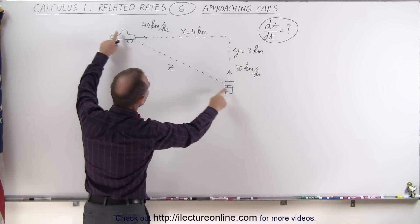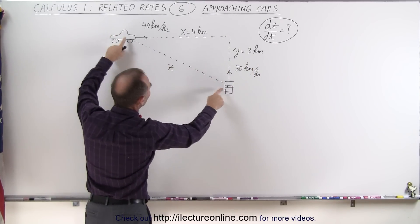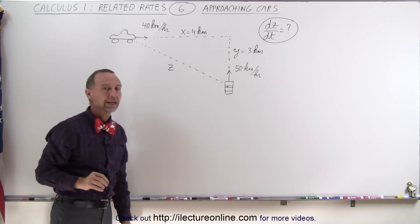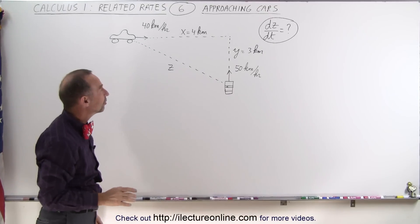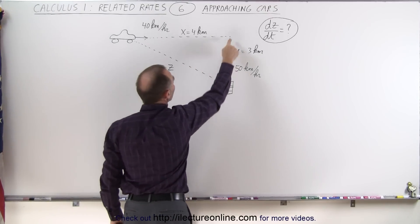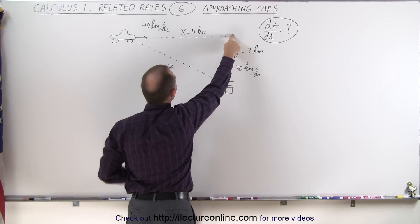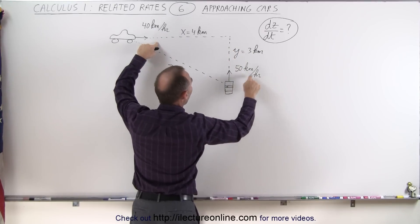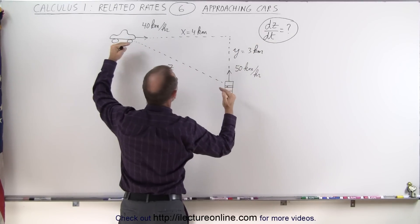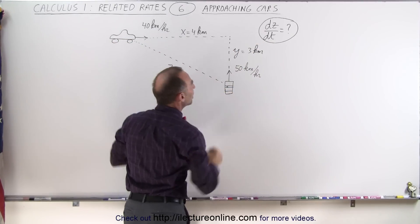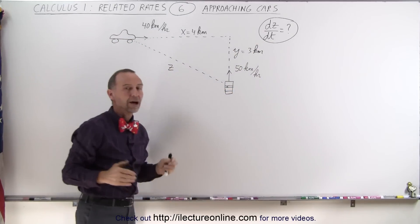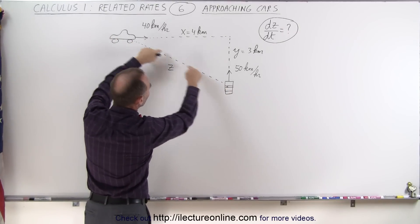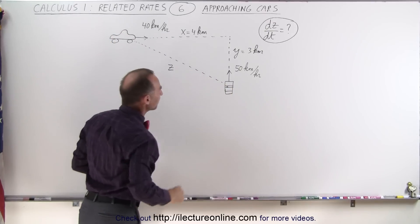The distance between them, let's call that z at this moment in time. And the question is, when they're this far away from this point and they're traveling this fast, how fast is the distance between them changing? How fast are they approaching along the line at z?